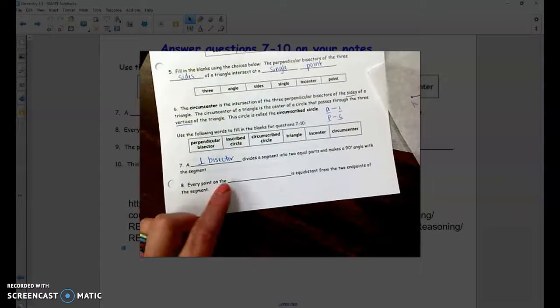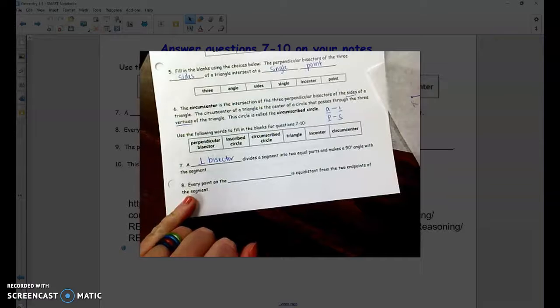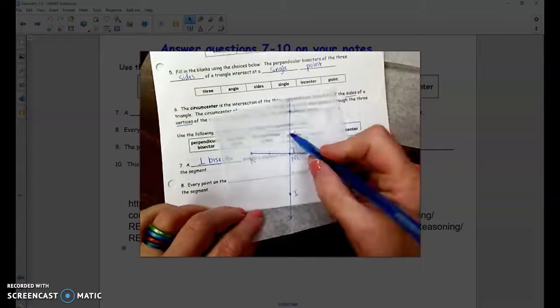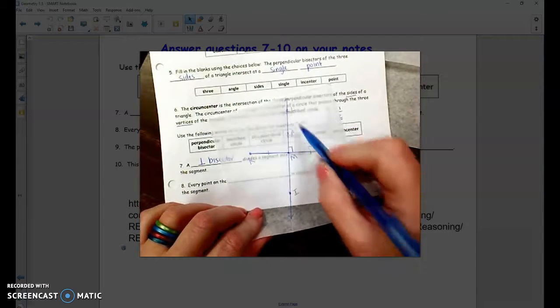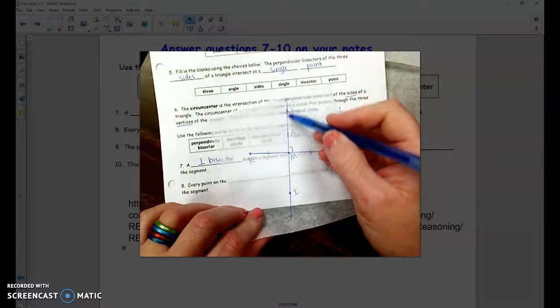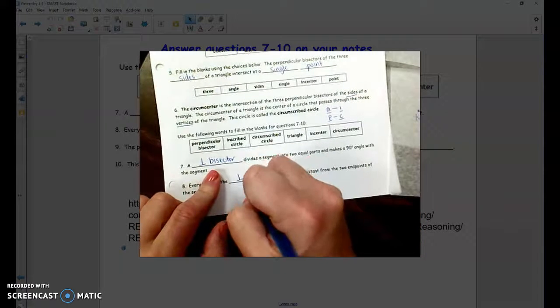Number 8, every point on the blank is equidistant from the two endpoints of the segment. So remember, these were the points that were equidistant from the two endpoints of the segment. And all of these points were on this figure that is again called the perpendicular bisector.